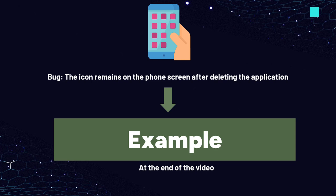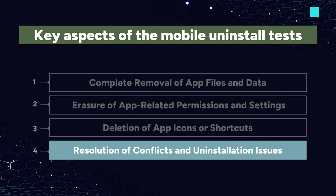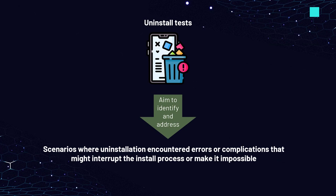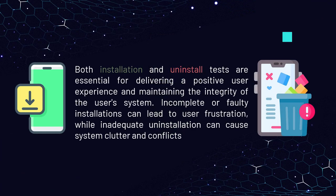The next key aspect tested during mobile uninstall tests is resolution of conflicts and installation issues. Uninstall tests aim to identify and address any potential conflicts or issues that may arise during the uninstallation process, including scenarios where uninstallation encounters errors or complications that might interrupt or make the uninstall process impossible. Both installation and uninstall tests are essential for delivering a positive user experience — incomplete installations can lead to user frustration, while inadequate uninstallation can cause system clutter and conflicts.